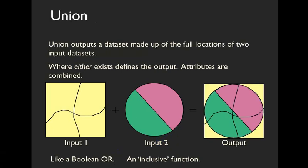Union is the more inclusive overlay. Union is similar to a Boolean OR. You end up with a larger output dataset. Union creates a new output that is made up of the full spatial extent of both input datasets. Notice that attributes and internal structure from both input datasets are preserved in the output.